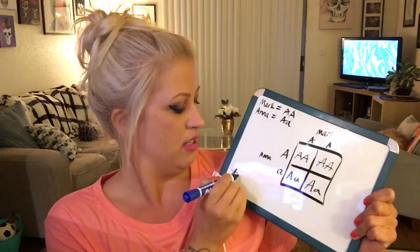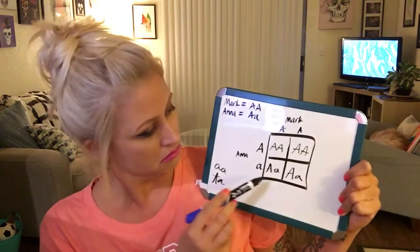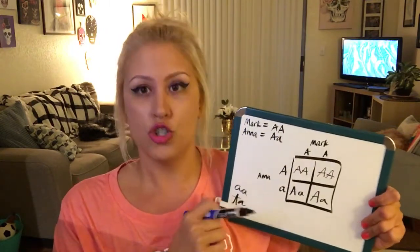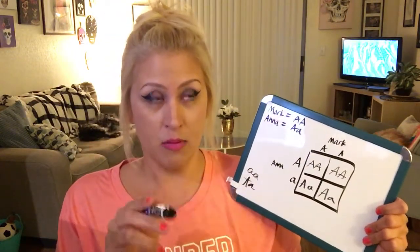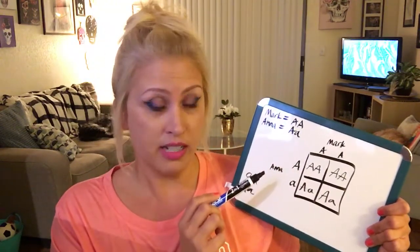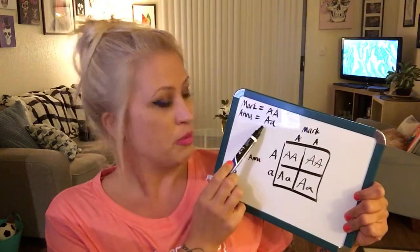Then we can answer the questions on screen. What percentage will be heterozygous — uppercase-lowercase? Two out of four, so 50%. What percentage will be homozygous recessive? None — 0%. What percentage will show the trait of having the widow's peak? Remember, homozygous dominant will show it, and heterozygous will also show it since the dominant allele masks the recessive one. Homozygous recessive would not have it, but we have zero of those. So 100% will show the widow's peak.